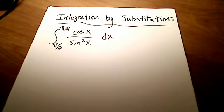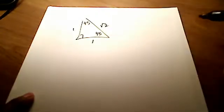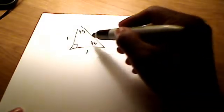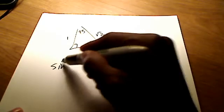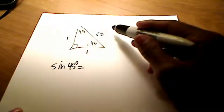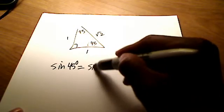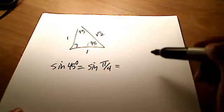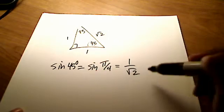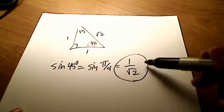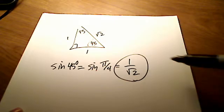Before I continue on with this problem, let me just recall to mind a couple of things regarding some trigonometry. You should recall from a 45-45-90 triangle — there's our picture right there — that if I wanted the sine of 45, that's opposite over hypotenuse, which in radians is sine of pi over 4, and that's simply 1 over the square root of 2. I'm going to leave it just like that.